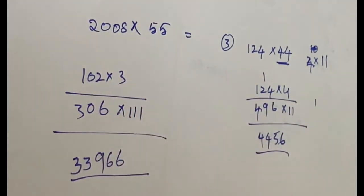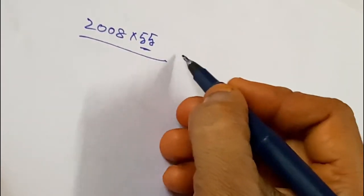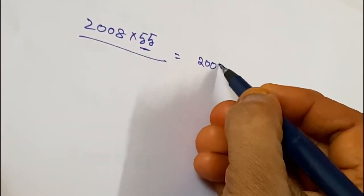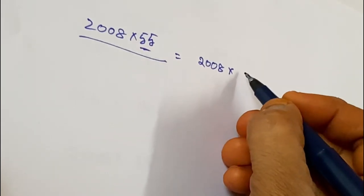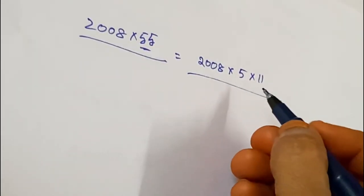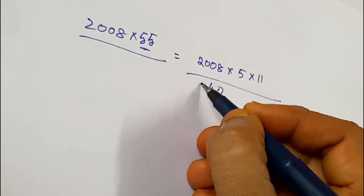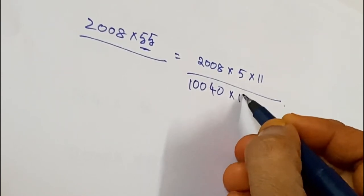Another example: 2008 into 55. So we have to convert 55 easily. It can be written like this also: 2008 into 5 into 11. So first, we have to multiply this: 40, 0, 4, 0 into 11.